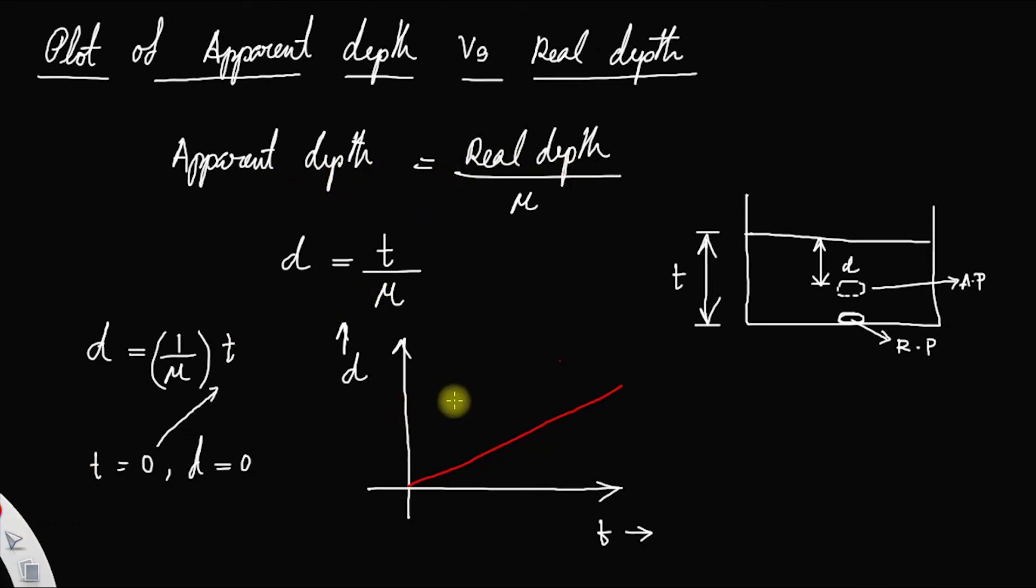How will you find the slope and what is the significance of slope? Slope is definitely the difference in the y axis divided by difference in the x axis. Consider a triangle here. Here, this is the graph of d is equal to 1 by mu times t. This is your d and this is your t. The x axis represents the real position and y axis represents the apparent position.